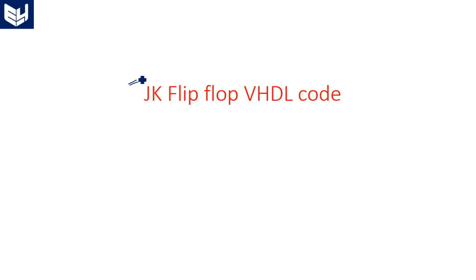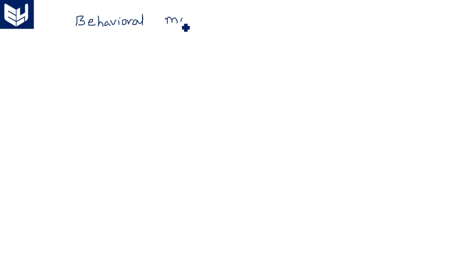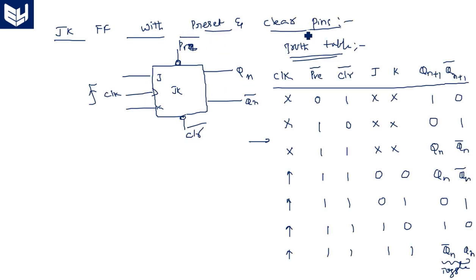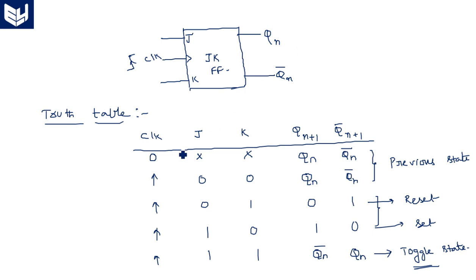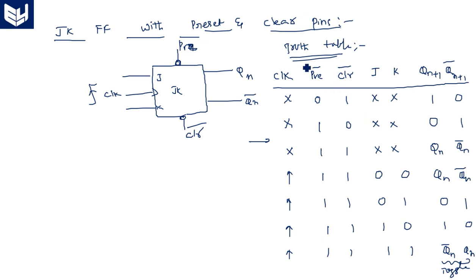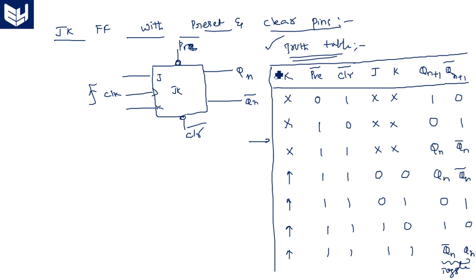Now let me tell you the VHDL code, which is one of the important tasks of our digital IC design subject. VHDL code is very important to write for each and every digital logic circuit. We are going to see a behavioral model for this JK flip-flop. We can write the VHDL code for either truth table, but since the version with clear and preset is more specified, I will go with that truth table.